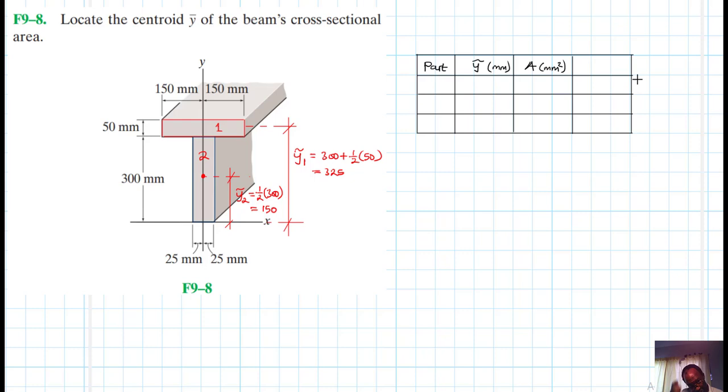So here we have part, then we have y-bar in millimeters. And then we have area in millimeters squared. And then we have y-bar times area in millimeters to the power three. So we have two parts, part one and part two. This one is going to be the summation section. So y1 we said here is 325, and the other one is 150.